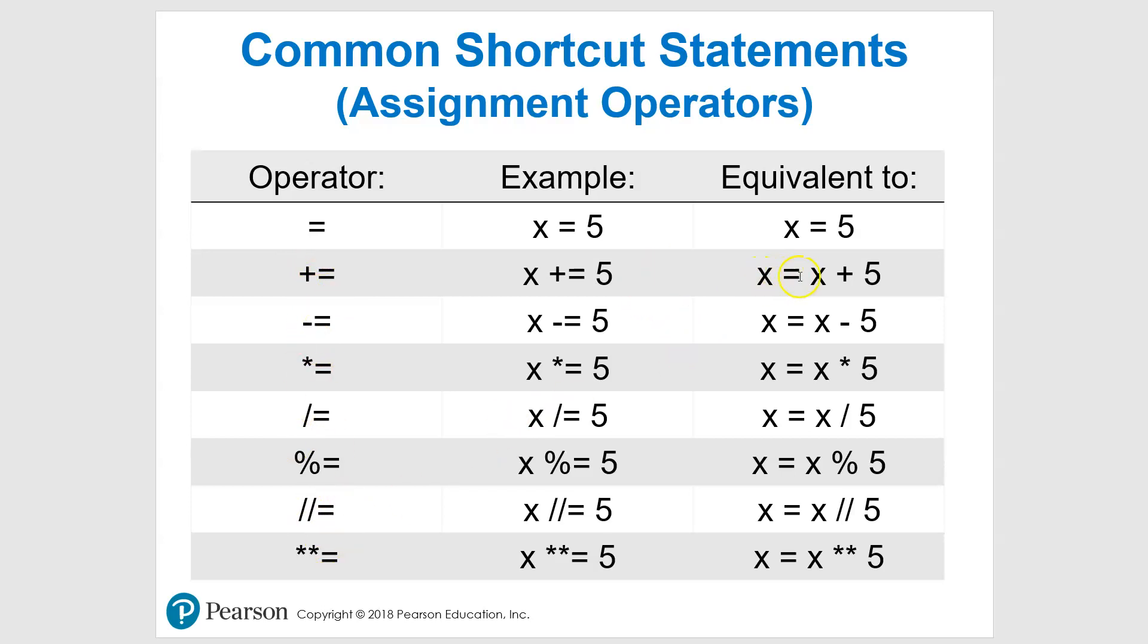So when you see plus equal, what that is telling you, and it would be in something like this. So X plus equal 5. That is the same thing as saying X equals X plus 5. It is just a shortcut. And you don't have to use these. But I want you to be able to understand when you look at this, it's not a typo in the book or wherever you're seeing it. This is a specific operator. Same thing with all these other ones. They work the same way. But you're totally fine using this. But if you want to simplify it and make the code a little bit shorter, go ahead and play with these.